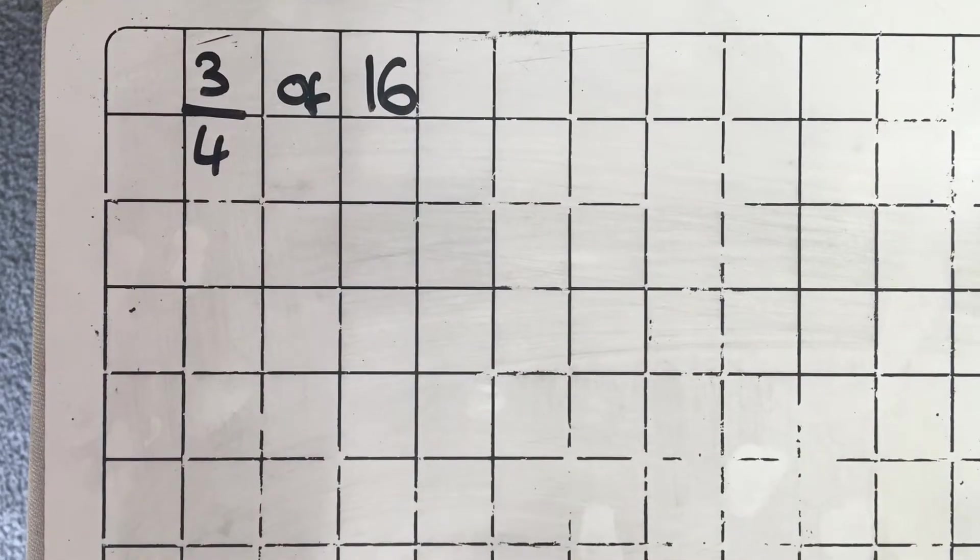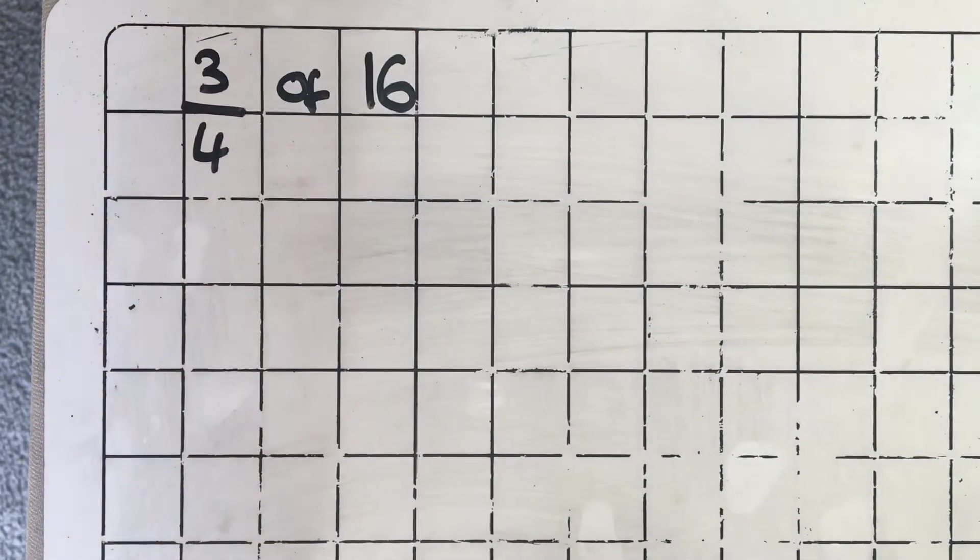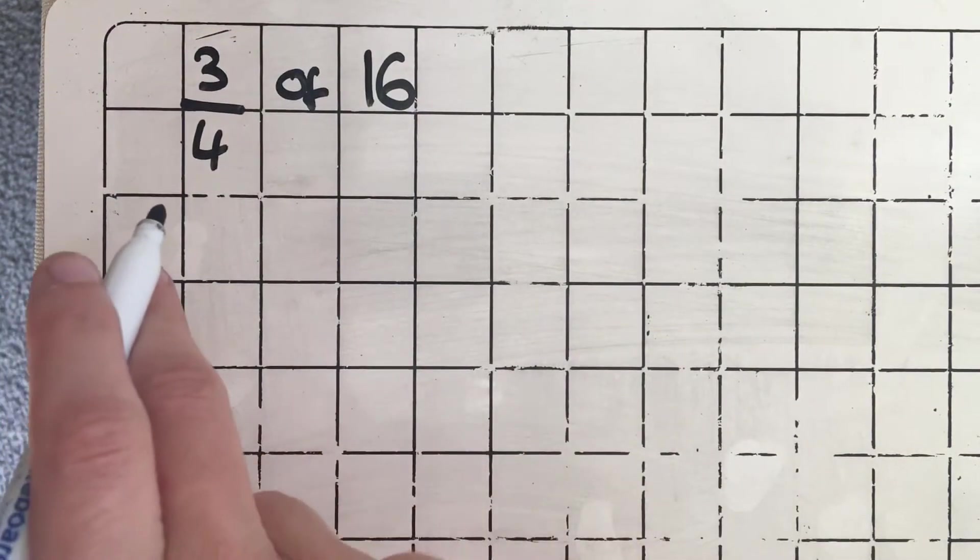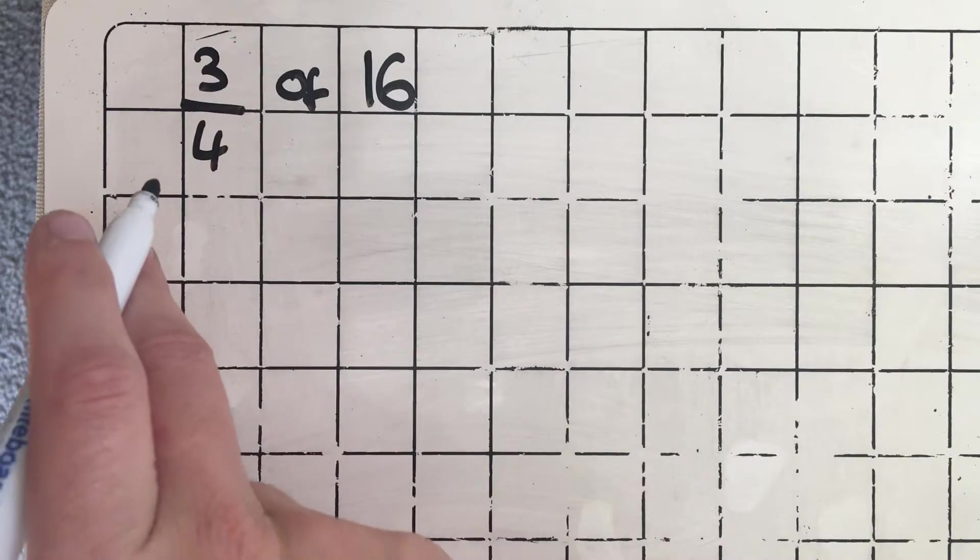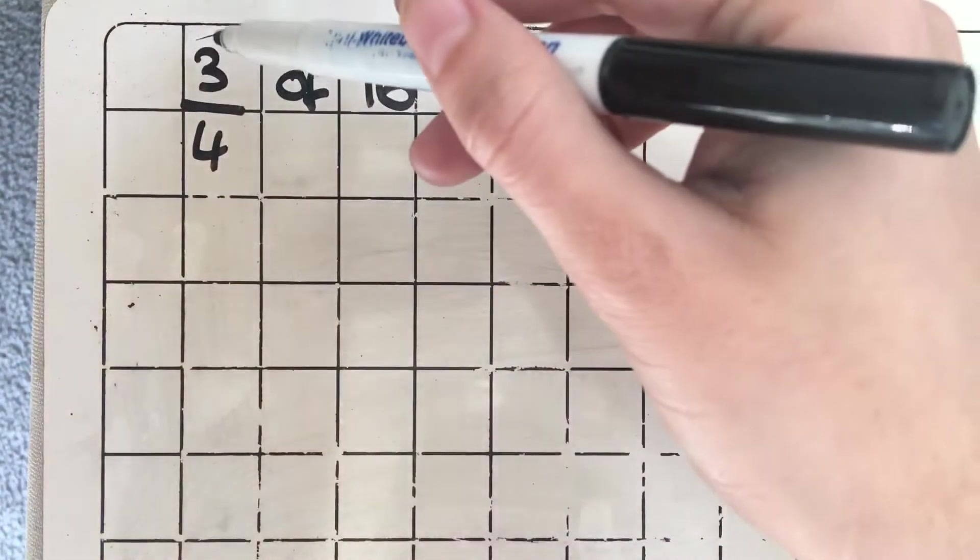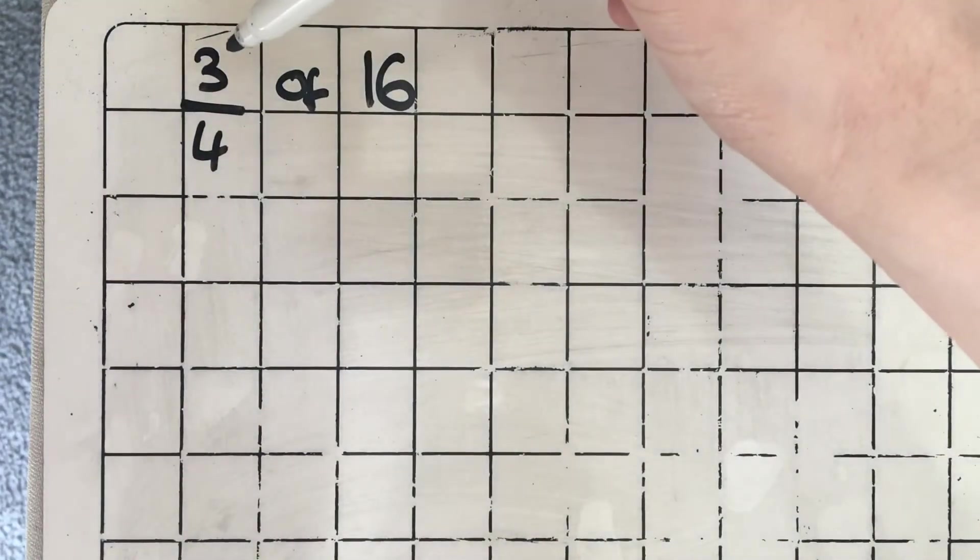So for this question we want to find 3 quarters of 16. So if we're looking for 3 quarters, the fraction tells us that the whole has been split into 4 equal parts because the denominator is 4, and that 3 parts have been selected because the numerator is 3.